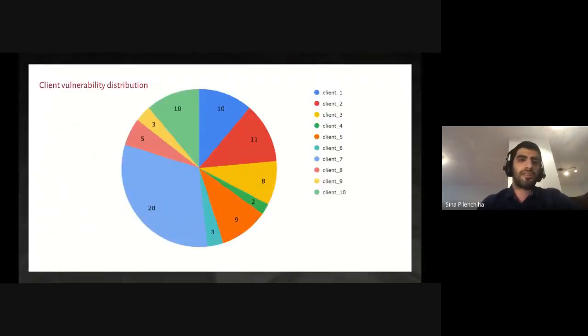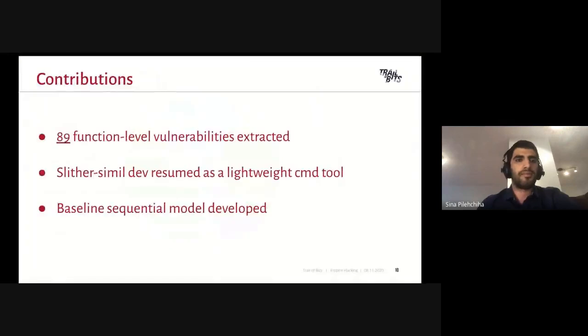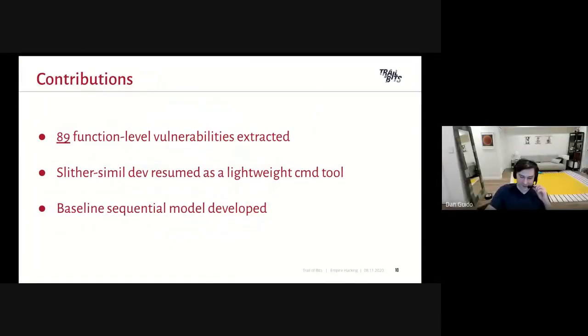And in this pie chart, you can see the distribution of almost 100 manually extracted vulnerabilities from Trail of Bits' previous audits. This is not all of the clients. It was a very time-consuming process. But yes, we were able to, until now, extract vulnerabilities for 10 different clients. Thank you for censoring the client names. And so, all in all, my contributions have been to gather these vulnerabilities from previous clients.